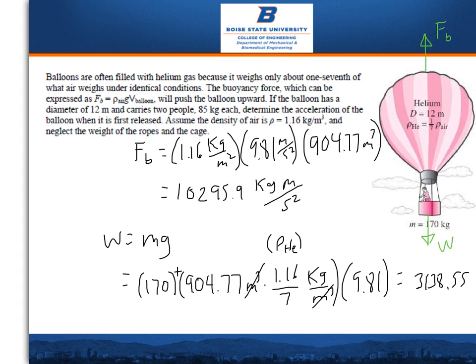So first to calculate the force of buoyancy, you take the density of air right here, and then you multiply it by the force of gravity, and then multiply it by the volume of the helium balloon.